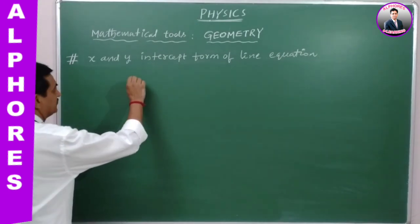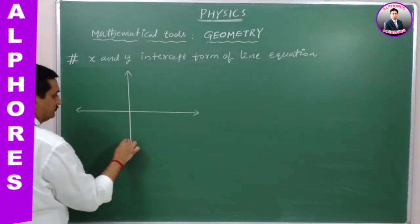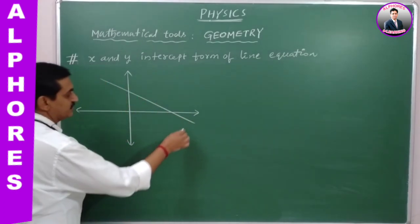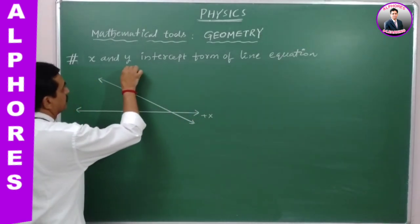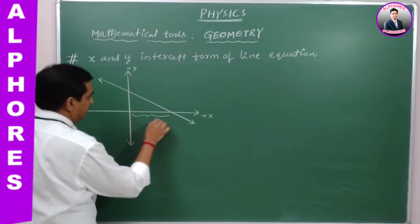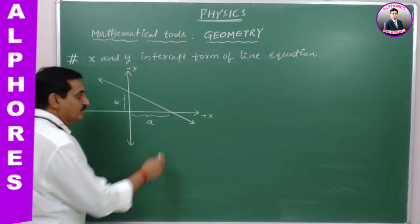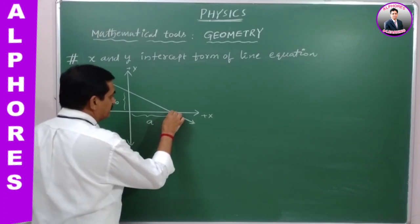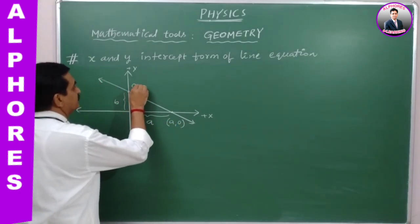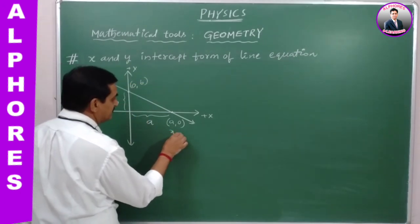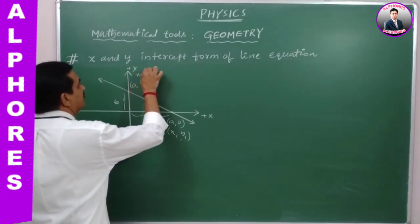Let us consider a straight line which gives X intercept — this is the X intercept, say A — and Y intercept, say B. So the coordinates of this point are A comma 0, and this point is 0 comma B. Now, these coordinates are X1 comma Y1, and these are X2 comma Y2.